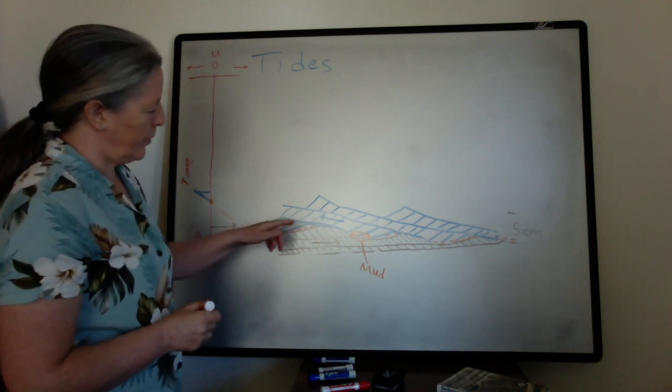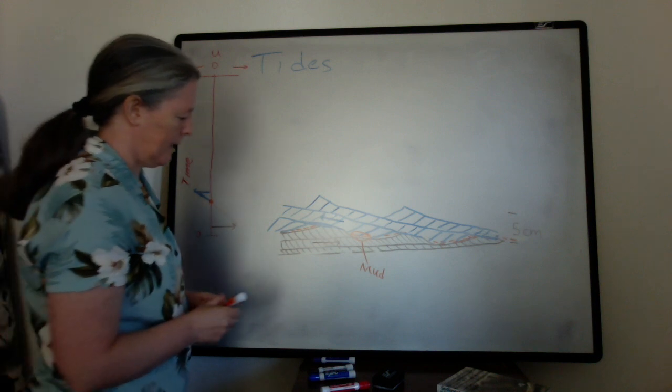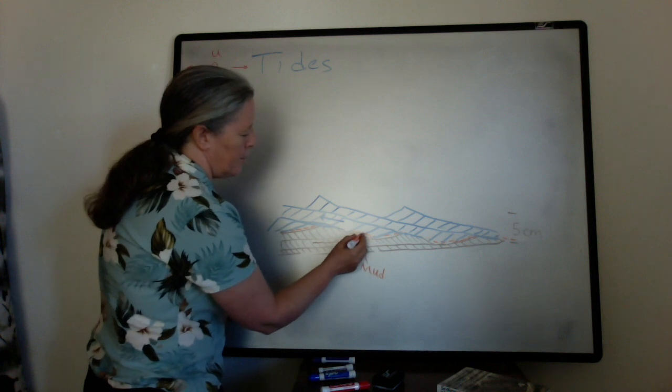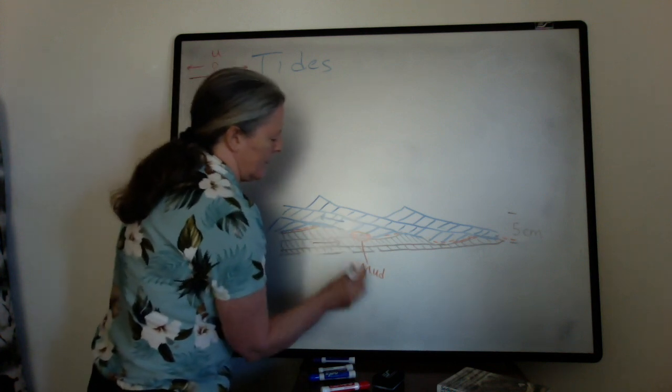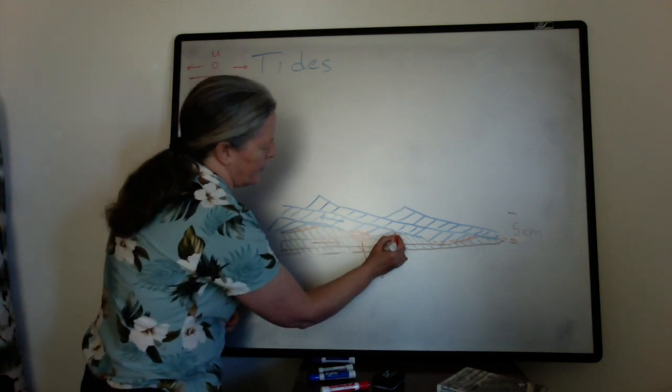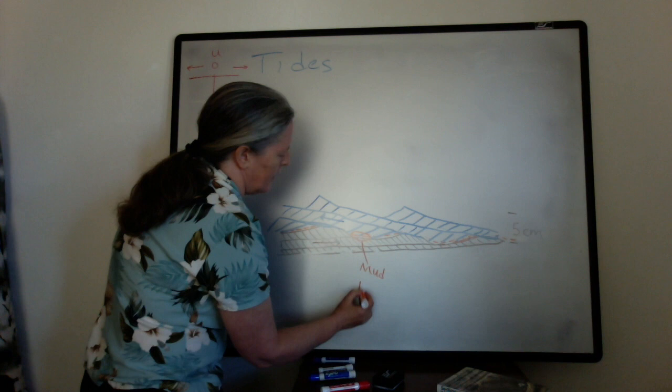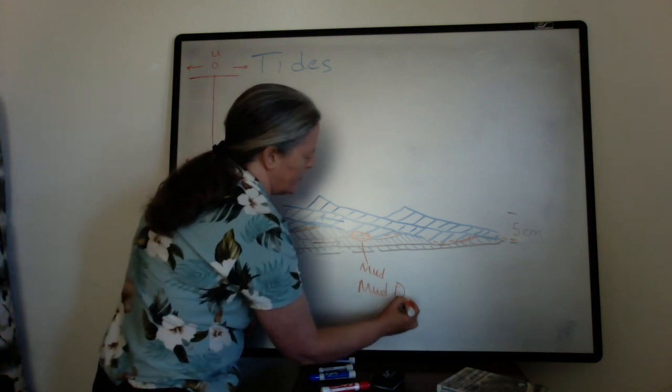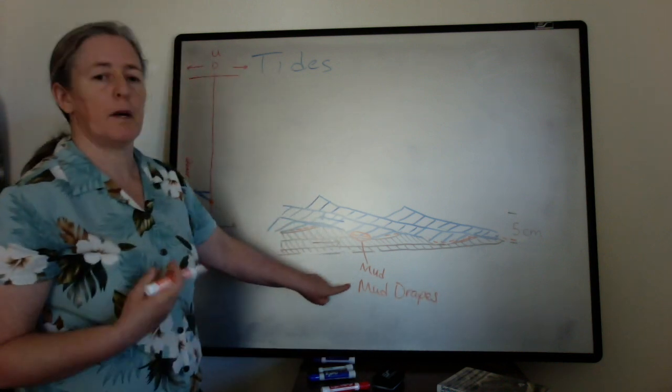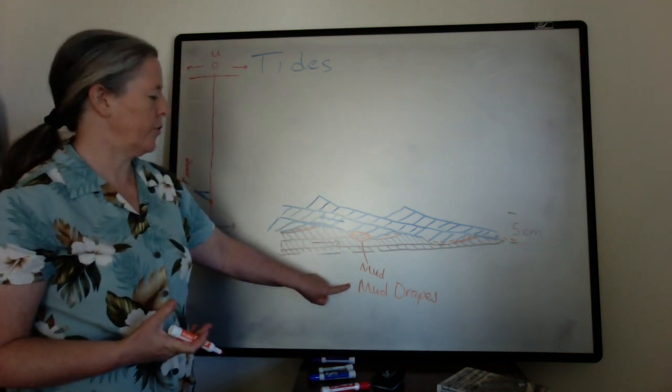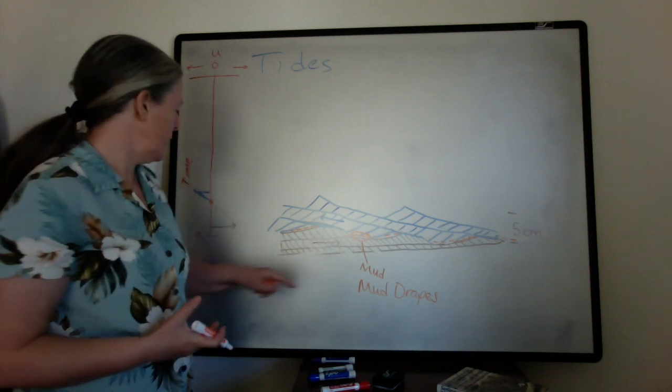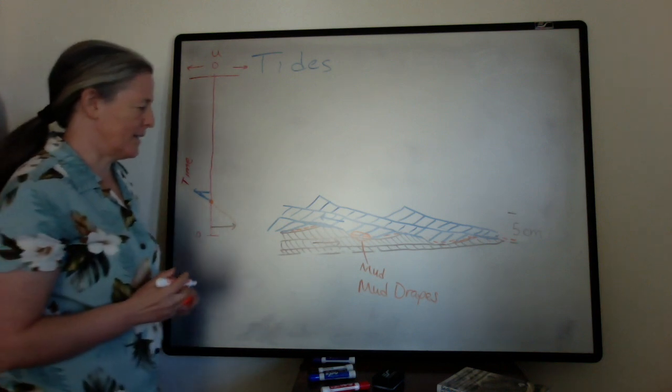So we have two things that are very distinctive of tides. The mud when it's incorporated inside the lamina, or sometimes it forms on the dipping surface here, these are called mud drapes. They're very distinctive because the mud requires a low flow speed to accumulate, and so they tell you that you had a time of standing flow which reflects the standing tide.